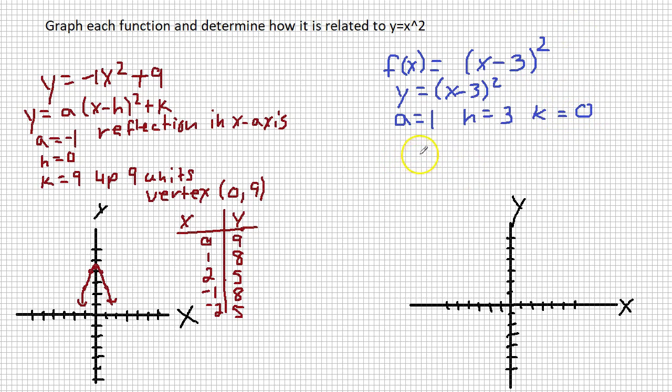So how is this related to Y equals X squared? It has been shifted to the right 3 units. So we just write, right 3 units. That's how it's related. It's been shifted to the right 3 units. So when I move right 1, 2, 3, I move up or down 0. How do I know? Because your vertex is always H comma K. So that means it's 3 comma 0. So that's why I put a dot at 3, 0.